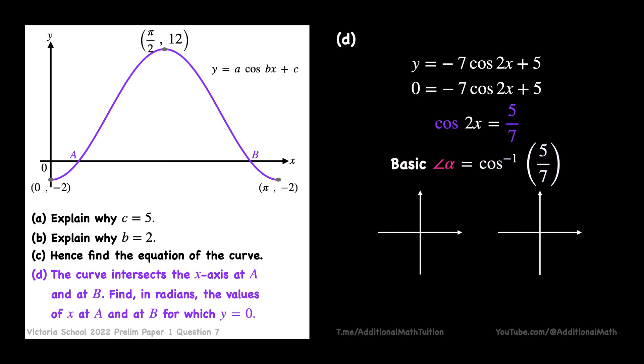In the four quadrants ASTC, for cosine to be positive, 2x must be in the first and fourth quadrant.